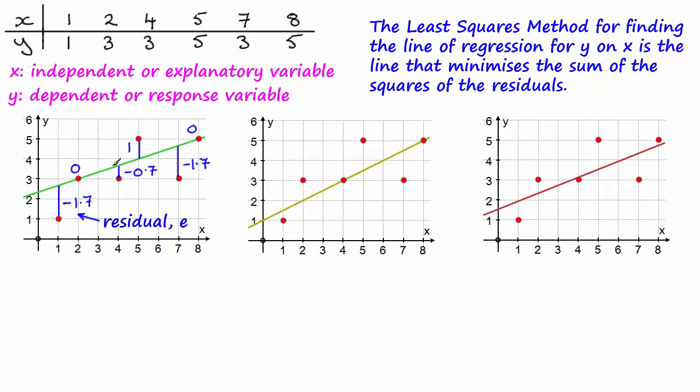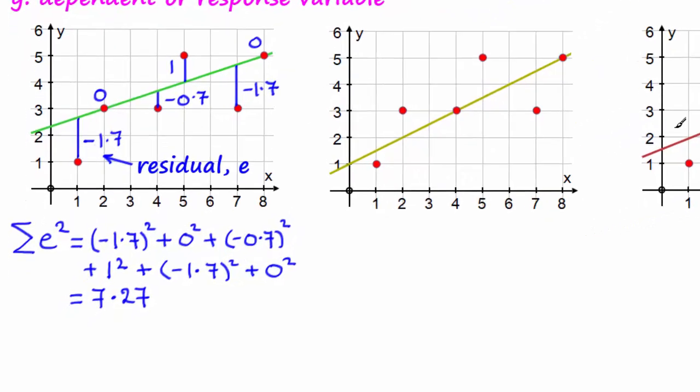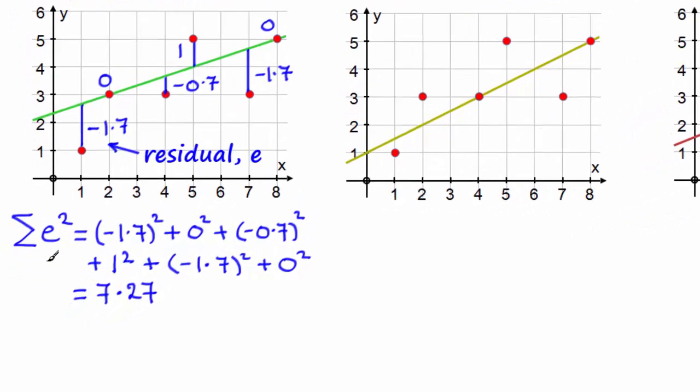So if you were to do this calculation for this line here by doing the sum of the squares of the residuals, we end up with a value of 7.27. Obviously if all our points on the scatter diagram were on that line we would have zero squared plus zero squared and so on, would end up with a total of zero. So the line of best fit would clearly be that line where all the points are on it.